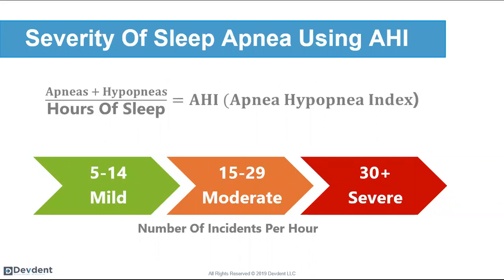In sleep medicine, we use a calculation called AHI — Apnea-Hypopnea Index — to measure the severity of a patient's sleep disorder. We count how many times per hour a patient has one of those incidents: their oxygen falls, their sleep cycle is disrupted, and they're forced to wake and re-breathe. If that happens 5 to 14 times an hour, they're considered mildly apneic; 15 to 29 is moderate; and 30 or more is considered severe.